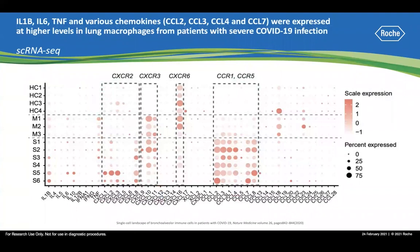Using single-cell RNA sequencing, cytokine expression levels in lung macrophages can be analyzed in severe and moderate COVID-19 patients as well as healthy controls. In severe COVID-19 patients, pro-inflammatory cytokines such as IL-1-beta, IL-6, and TNF-alpha were all highly expressed. Chemokines such as CCL-2, 3, 4, and 7 were also highly expressed. These chemokines recruit additional monocytes, neutrophils, and macrophages to lung tissue, which in turn release more pro-inflammatory cytokines, further contributing to disease severity.